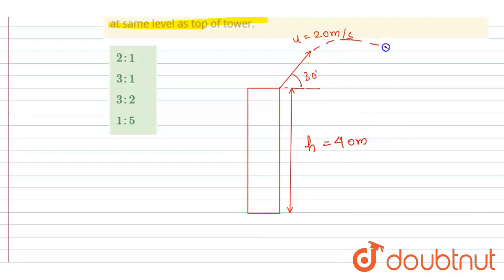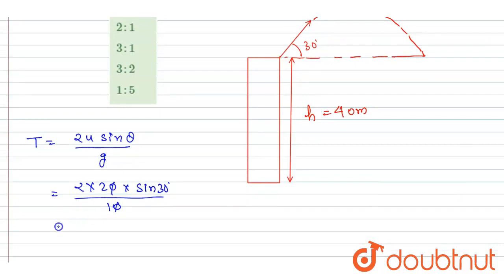So you can get this time when it will be at the same level simply by using the time of flight formula in projectile motion. When it will travel this distance in horizontal direction, the time of flight is simply T = 2u sin θ / g. So here u is 20, sin 30 is half, by g is 10. So this will get canceled out, sin 30 is half, so it will take 2 seconds.